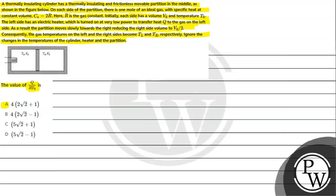The options are: Option A: 4(2√2 + 1), Option B: 4(2√2 − 1), Option C: 5(√2 + 1), Option D: 5(√2 − 1). For this question, the key concept we will be using is the first law of thermodynamics.